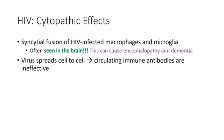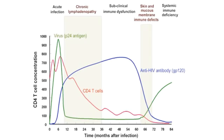Cytopathic effects include syncytia formation — similar to herpes virus — causing fusion of macrophages and microglia in the brain. This can cause encephalopathy and dementia. HIV also spreads from cell to cell through immune tissues, and our antibodies are largely ineffective against it.